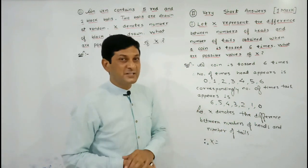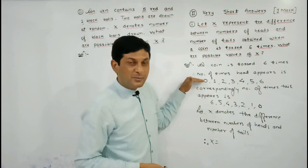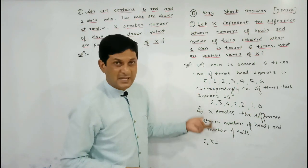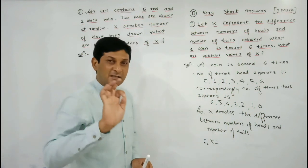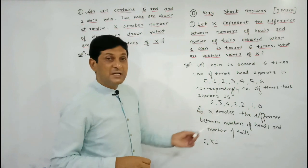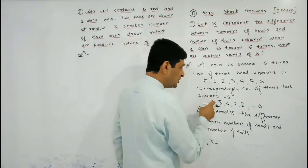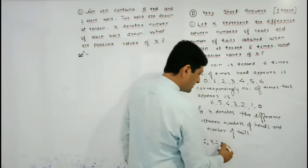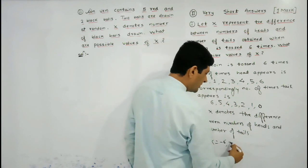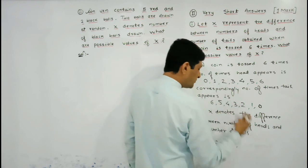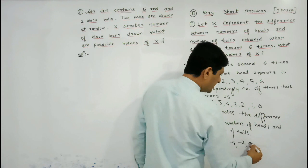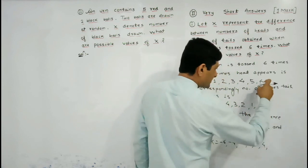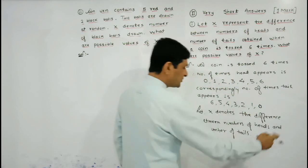Using these values, we find the possible values of X which shows the difference between number of heads and number of tails. In the first case: 0 minus 6 equals minus 6. Then 1 minus 5 equals minus 4. Then 2 minus 4 equals minus 2. Then 3 minus 3 equals 0. Then 4 minus 2 equals 2. Then 5 minus 1 equals 4. And lastly 6 minus 0 equals 6.